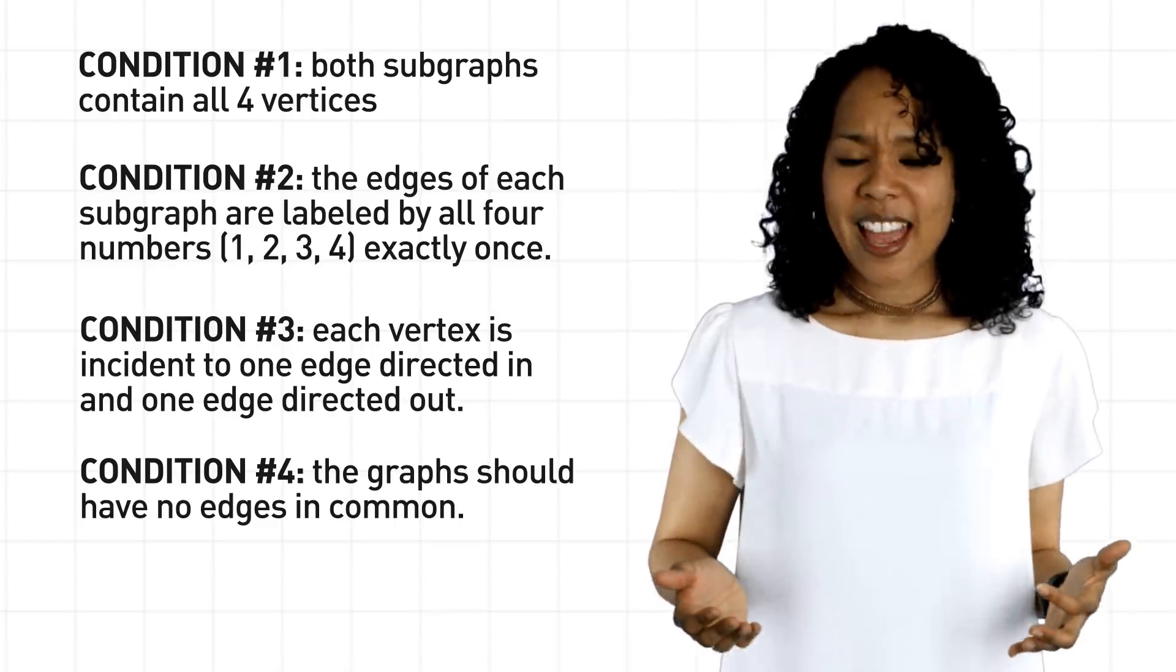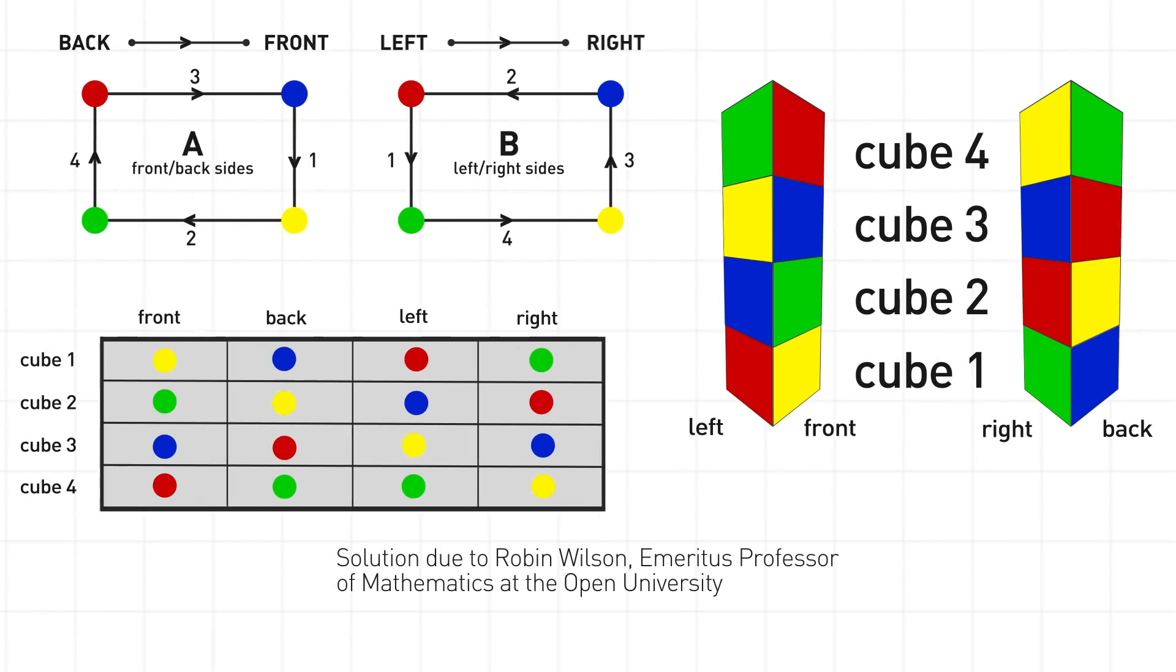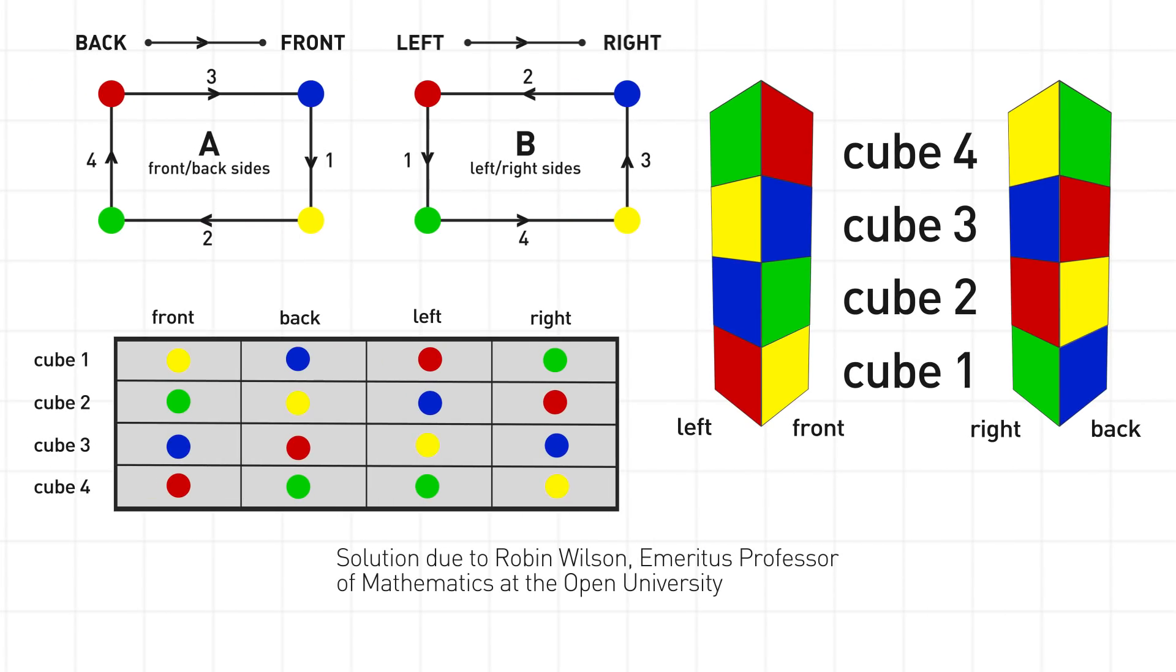Now, I strongly encourage you to pause the video and see if you can find the graphs, because I'm about to reveal the solution. Ready? Here it is in three, two, one. Voila! If we stack the cubes like this, then all four colors appear on each of the four sides of the stack. See how cool graph theory is?